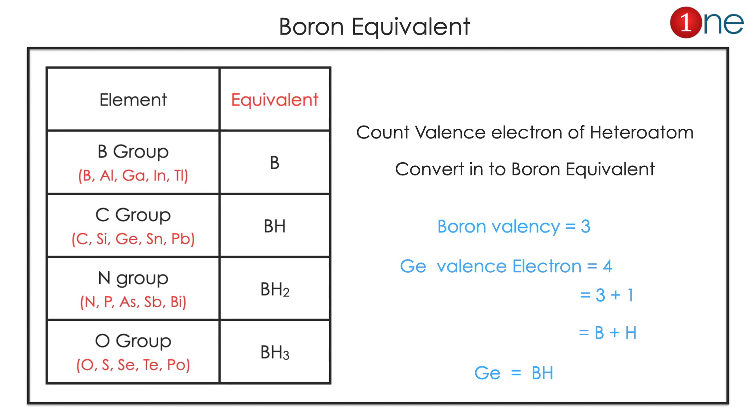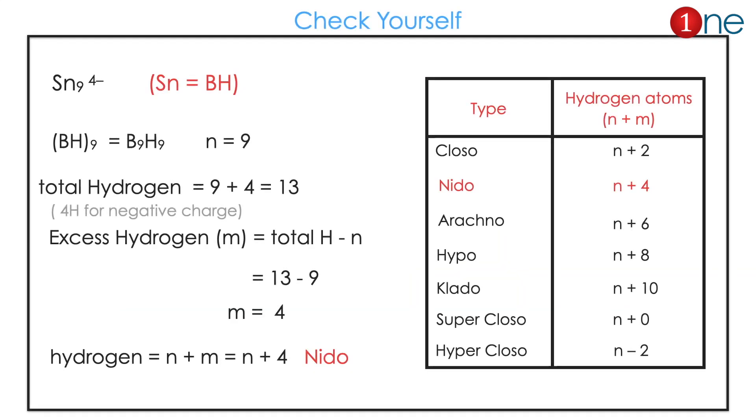Here I give an example to check yourself: Sn9^4-. Sn is in the carbon group which is Sn equals BH. If you convert it, Sn becomes B9 and H9, so totally n equals 9. Then total hydrogen: 9 plus 4 (4 comes from the negative charge), so totally 13. So m is 13 minus 9 which is 4. So n+4 structure which is nido. It is that easy. That's all from this video, thanks for watching.